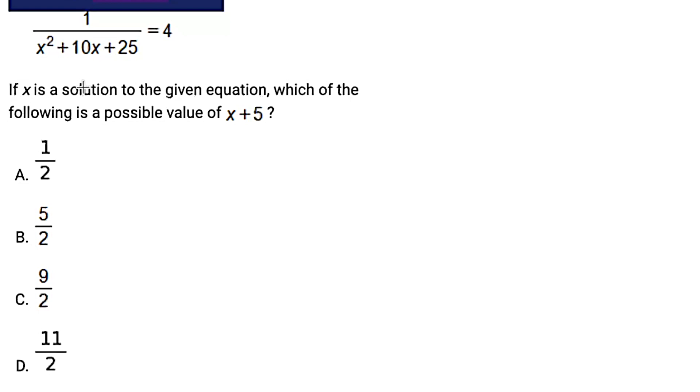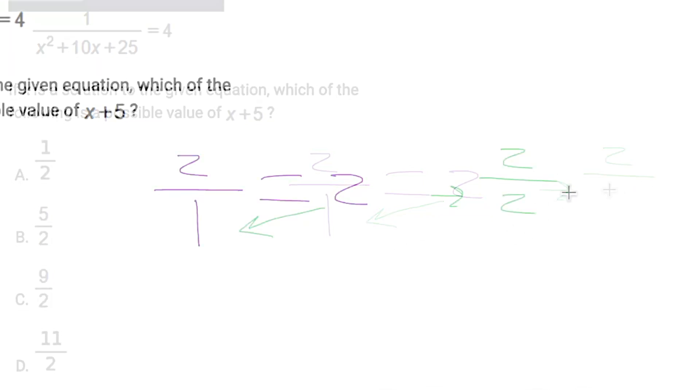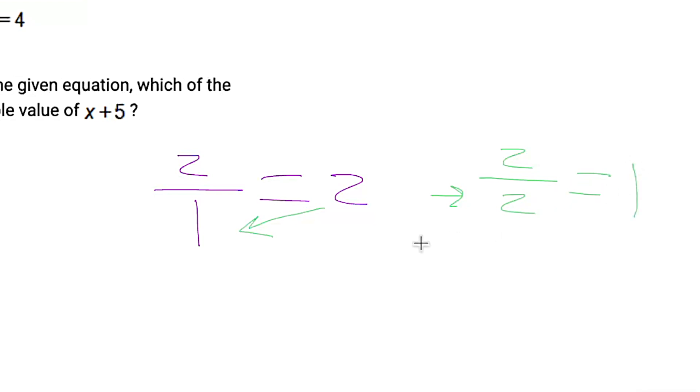First thing that I would do shortcut-wise is my little, I call it the fraction switcheroo. And this is when you have a fraction. Let's say we have the fraction 1 over 2. Actually, no, let's change it. Let's say we have the fraction 2 over 1. Would you agree that that is equal to the number 2? You would. So the trick is you can take a whole number and you can switch that whole number with the denominator of a fraction that it's equal to.